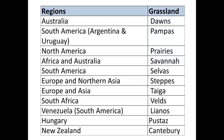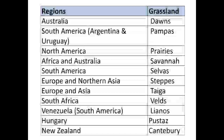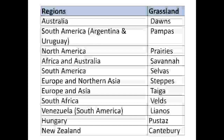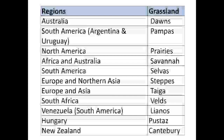Now look at this table carefully for tropical and temperate grasslands. Please remember: Llanos is the grassland in the most northern part of Venezuela in South America. In South America, there is also Selvas. Argentina and Uruguay in South America are called Pampas. These are the three different grassland names in South America.